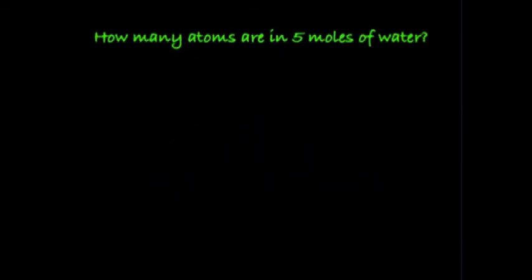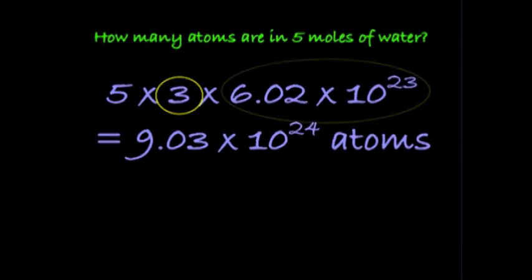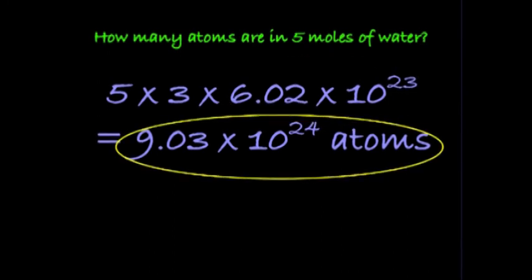So, here's the question we started with. How many atoms are in 5 moles of water? We take the 5 moles of molecules, and multiply by the number of atoms per molecule, and multiply this by Avogadro's number. And get 9.03 times 10 to the 24 atoms in 5 moles of water.